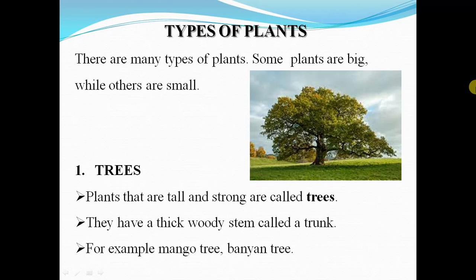The first type is tree. Plants that are tall and strong are called trees. They have a thick woody stem called trunk. For example, mango tree and banyan tree. You can see in this picture — this is the picture of a tree.